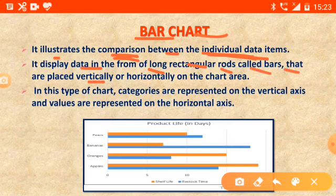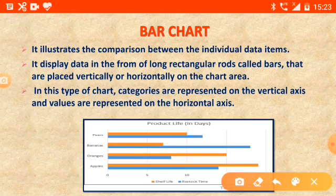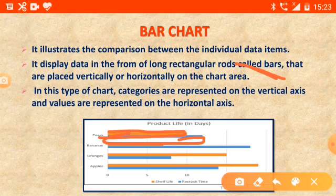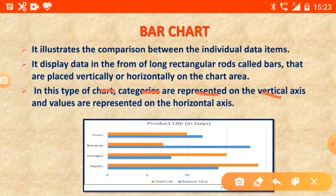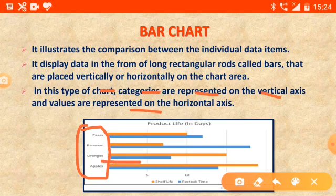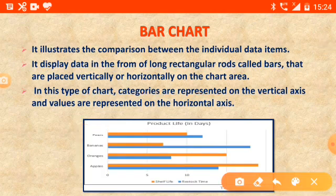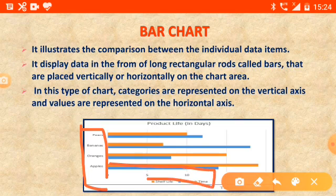Data is placed vertically or horizontally on the chart area, representing our data in rectangular rods. These rods are known as bars. In this type of chart, categories are represented on the vertical axis, and the values are represented on the horizontal axis. So remember: category is shown on the vertical axis and values on the horizontal axis.